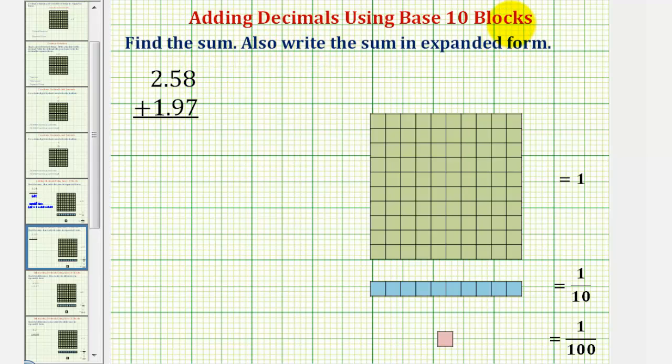We want to find this sum using base ten blocks, and also write this sum in expanded form. We have two and fifty-eight hundredths plus one and ninety-seven hundredths.